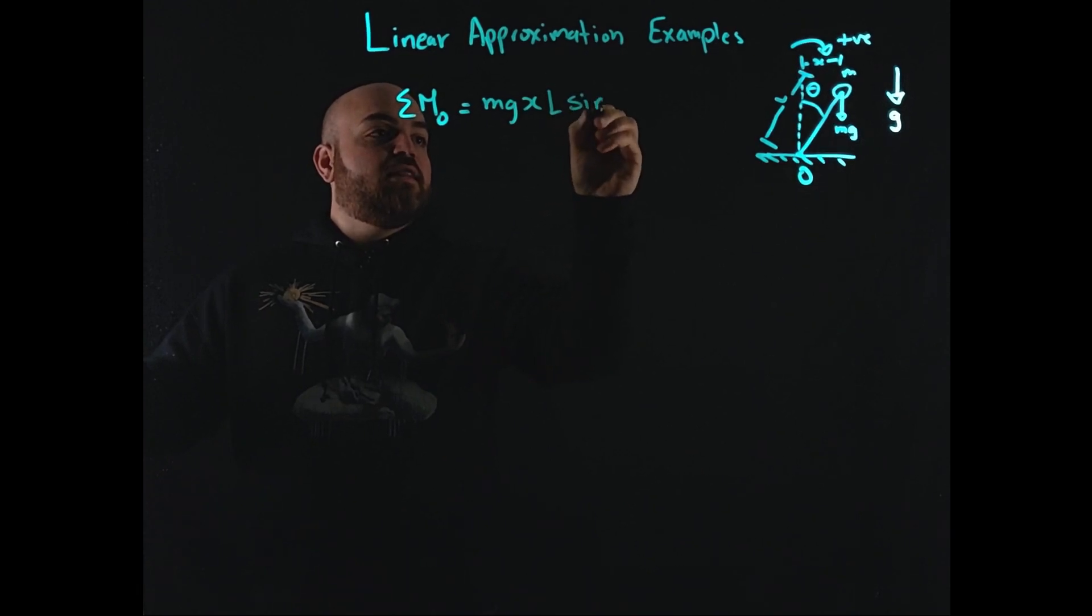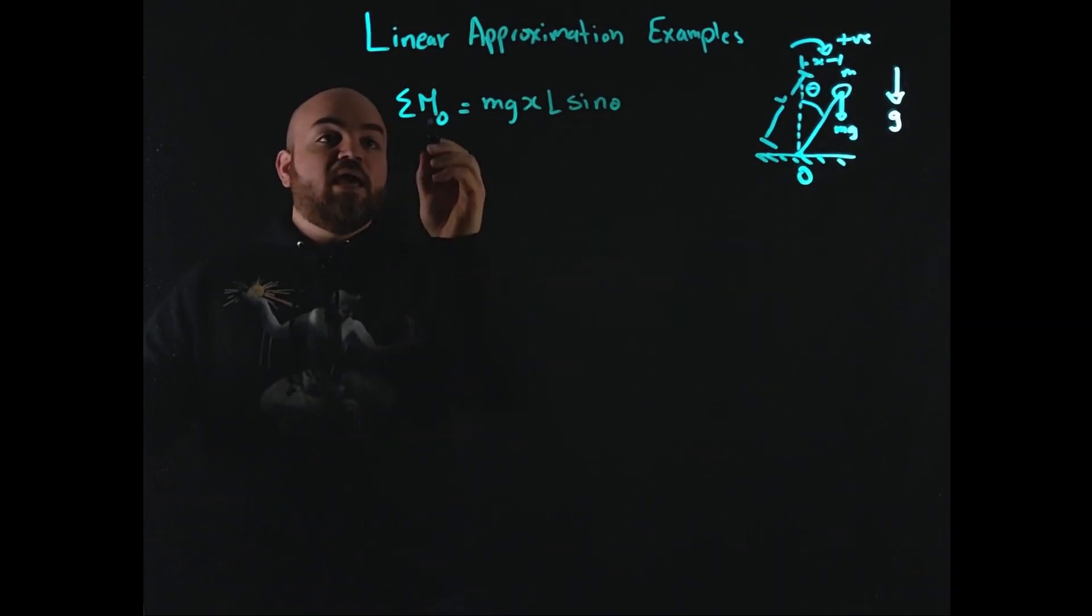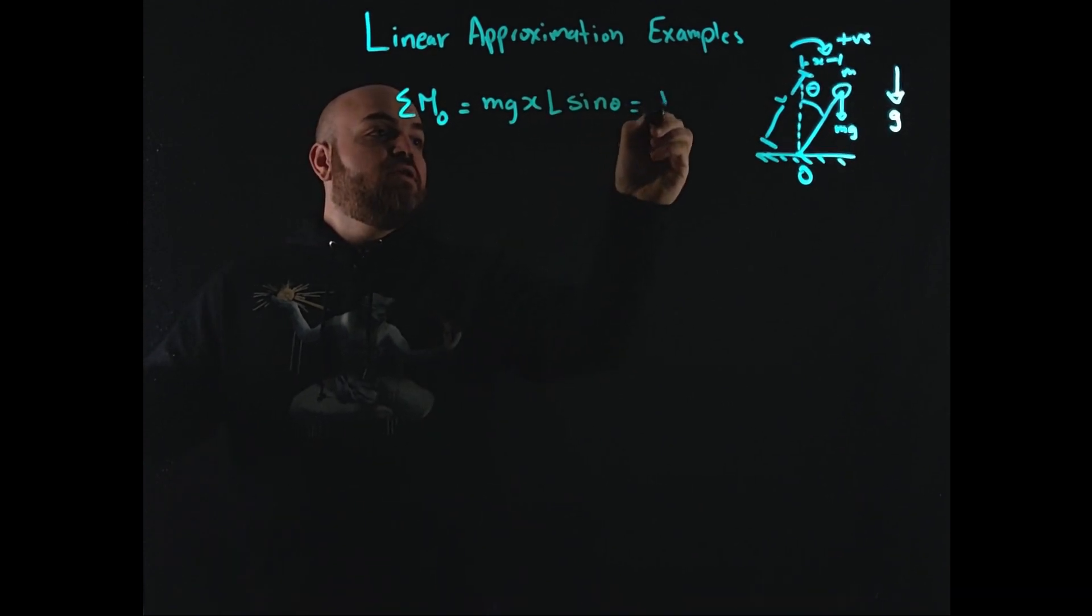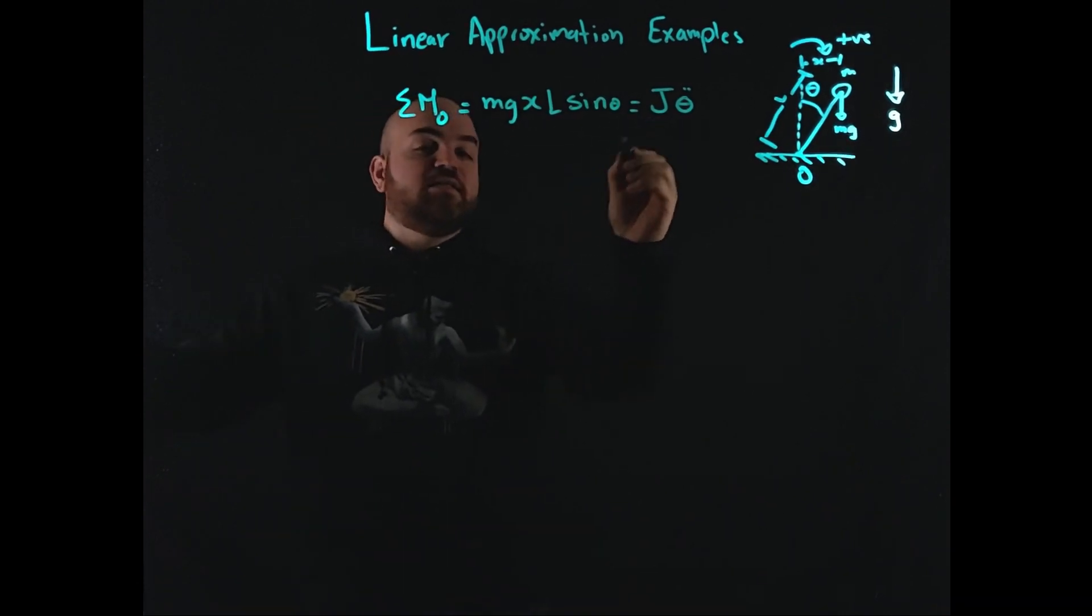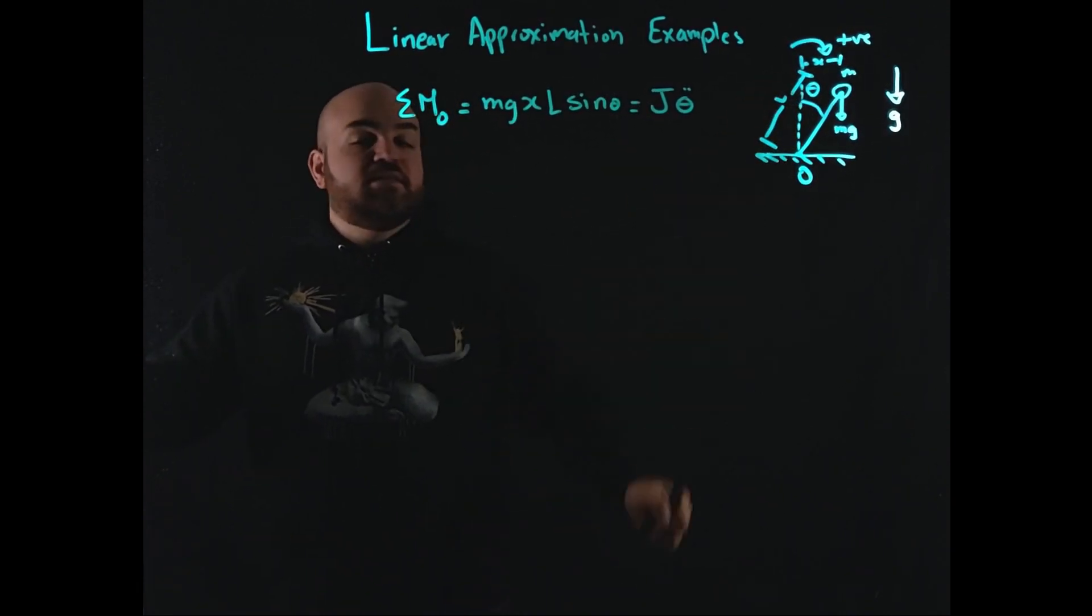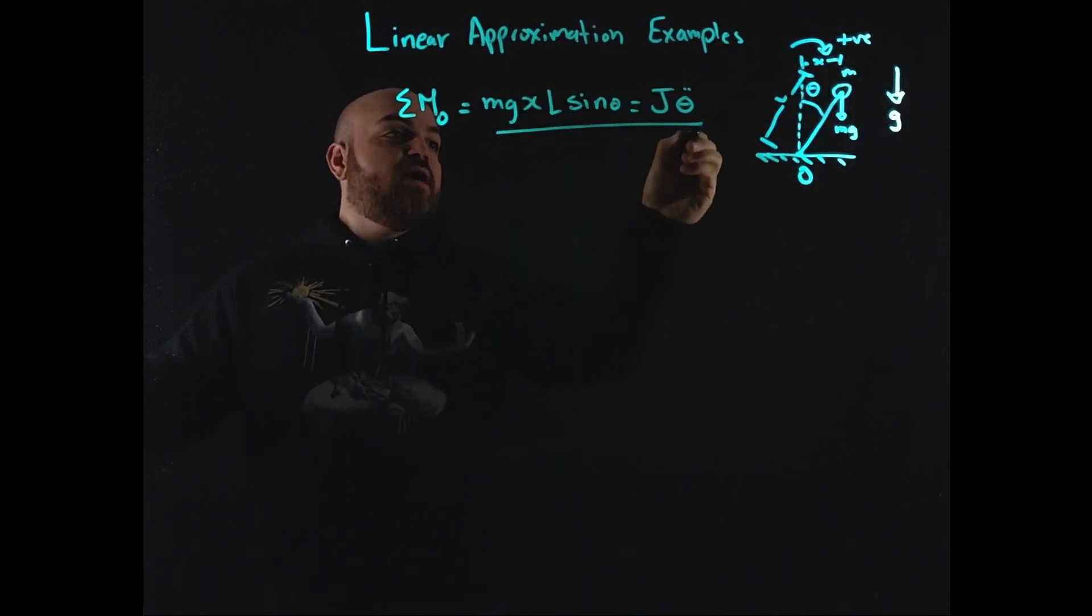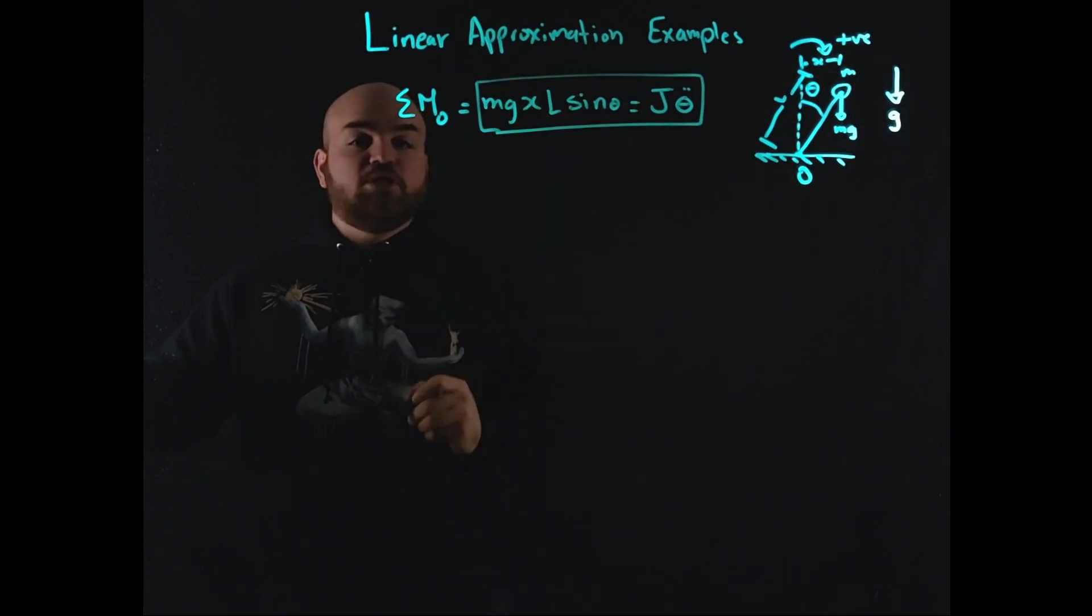So L times the sine theta is what gives you this projection of x itself. So L sine theta, right? And this, the summation of moment actually gives you the motion of theta double dot, right? So J theta double dot, because J is the moment of inertia of this spinning mass or rotating mass, and theta double dot is the angular acceleration.